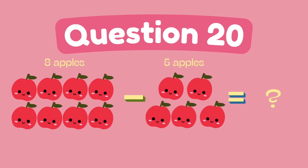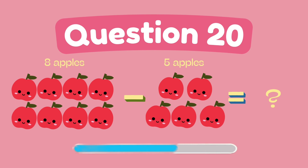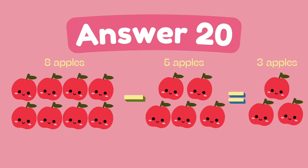What is eight minus five? The answer is three.